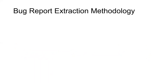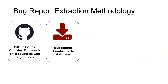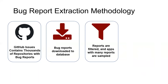How did we find a collection of reproducible bug reports? We used GitHub to find open source apps and bug reports corresponding to those apps. Next, we downloaded thousands of issues that were submitted to GitHub. We filtered through these issues with a variety of conditions: we only wanted bug reports whose apps were on the Google Play Store, we wanted resolved issues, and we wanted reports with the word 'Steps' somewhere in the description. If an app had a lot of bug reports, we randomly selected 10 of them.